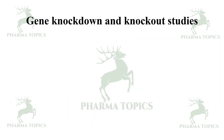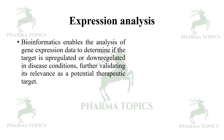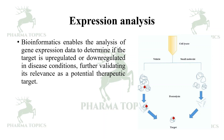Gene knockdown and gene knockout studies: bioinformatics can guide experimental approaches like RNA interference or CRISPR-Cas9 mediated gene knockout to validate the impact of target inhibition in disease-relevant cellular models. Expression analysis: bioinformatics enables analysis of gene expression data to determine if a target is upregulated or downregulated in disease conditions, further validating its relevance as a potential therapeutic target.